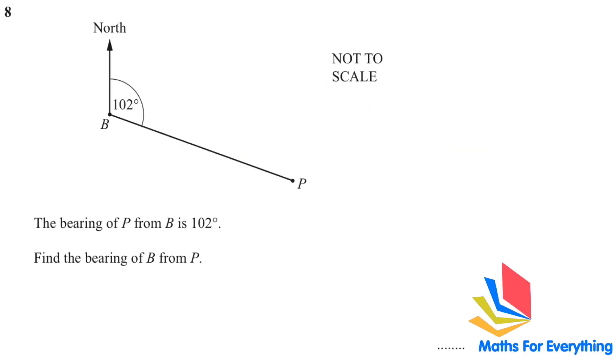Question number eight is a bearing question. We have been given the bearing of P from B is 102, so this is 102. Find the bearing of B from P. If the acute or obtuse angle is given to us and we want to find the other bearing, that means the outside part, please remember that you just have to add 180 and you will get the answer. So the answer is 282.